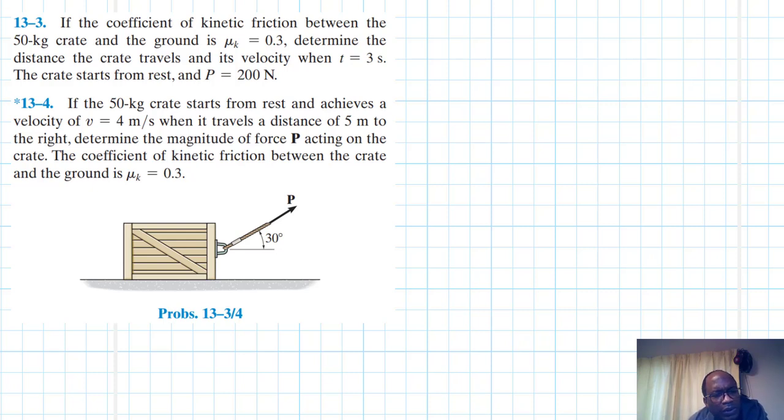Hello, I welcome you all to this another interesting screencast. The problem reads: If the coefficient of kinetic friction between the 50 kg crate and the ground is mu k equal to 0.3, determine the distance the crate travels and its velocity when t equals 3 seconds.